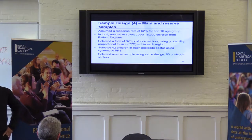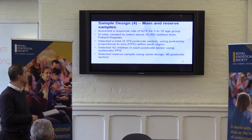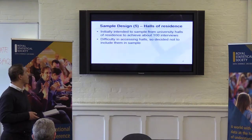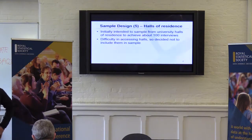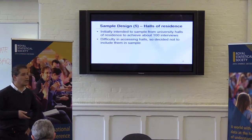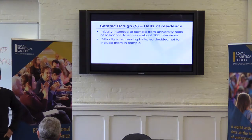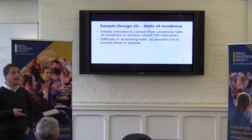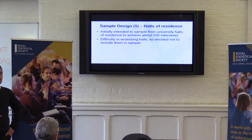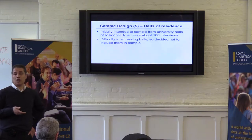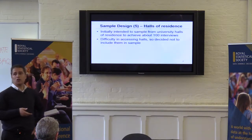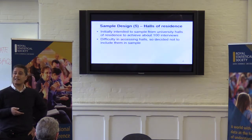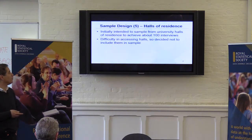In anticipation of lower response rates, we selected a reserve sample of 80 postcode sectors using exactly the same design. We also wanted to cover halls of residence, as the 17 to 19 age group includes students. The patient register would likely not have up-to-date addresses for these people, so we thought we needed to go to halls of residence and sample them directly, aiming to achieve about 100 interviews. However, it turned out to be difficult to access halls of residence, so in the end we dropped them from the sample.